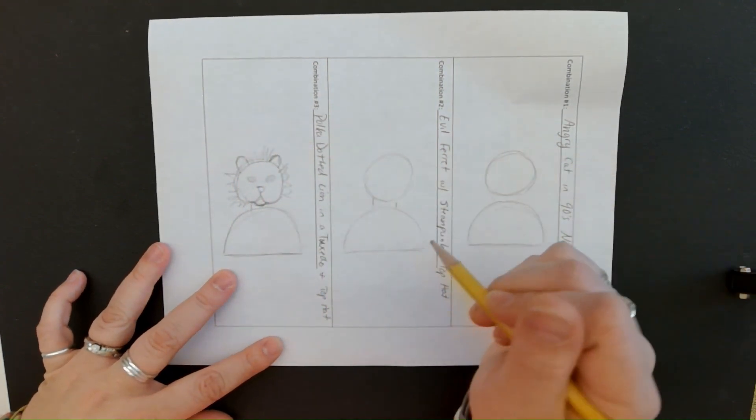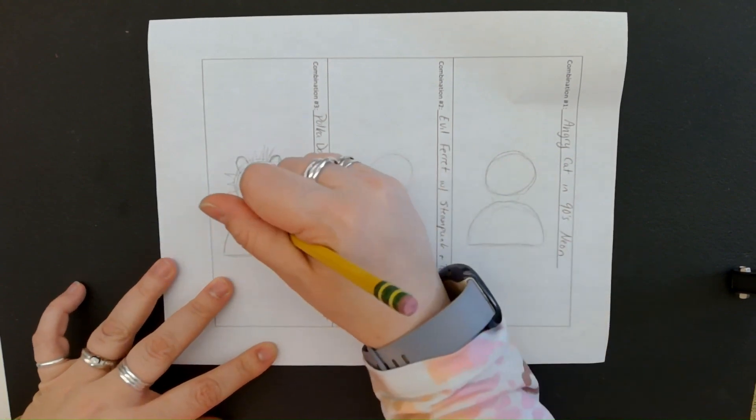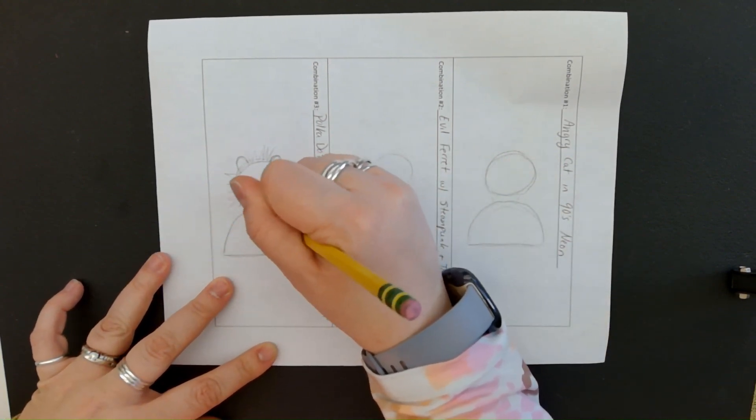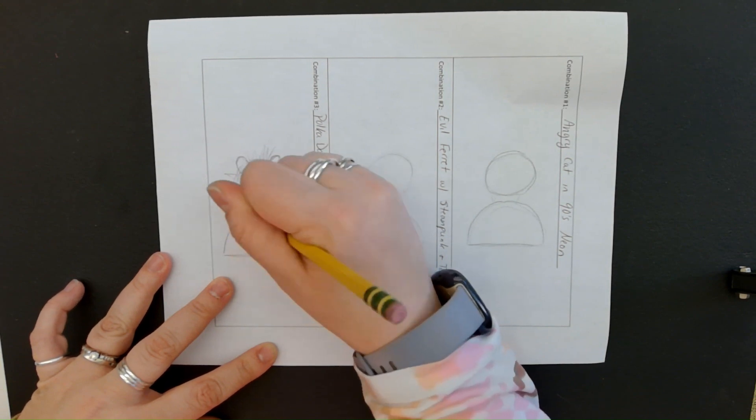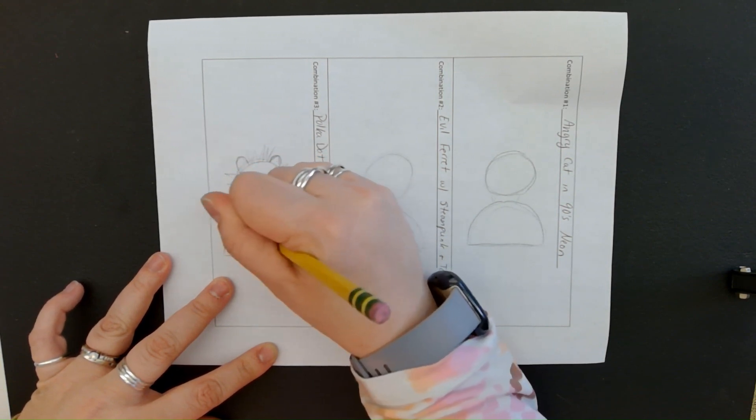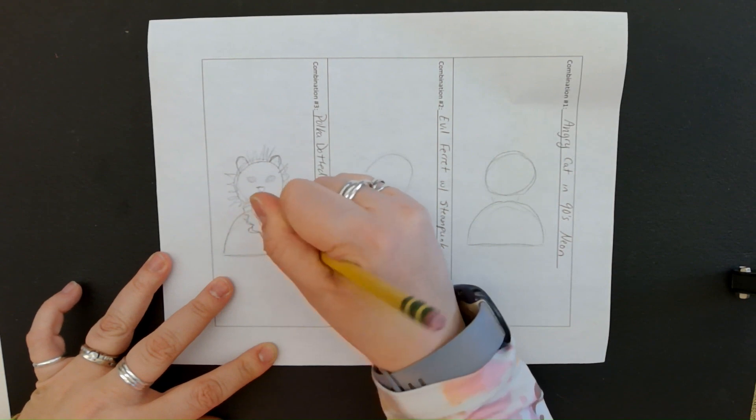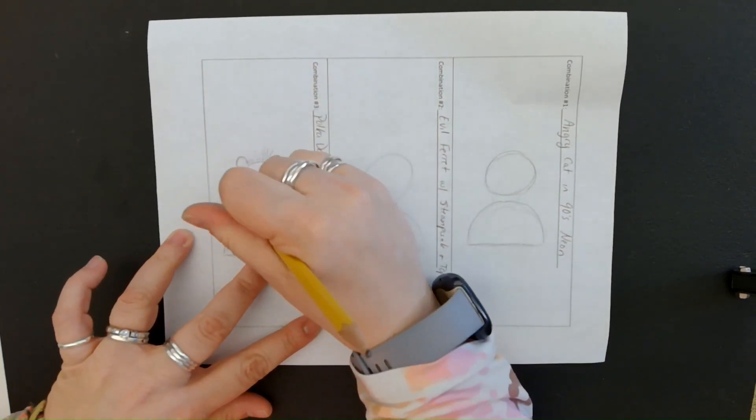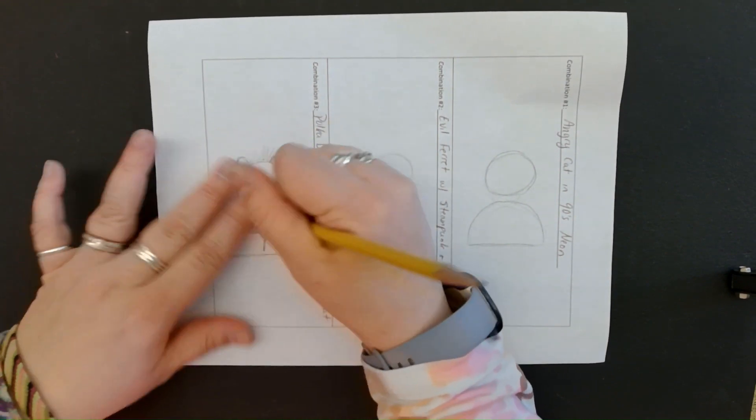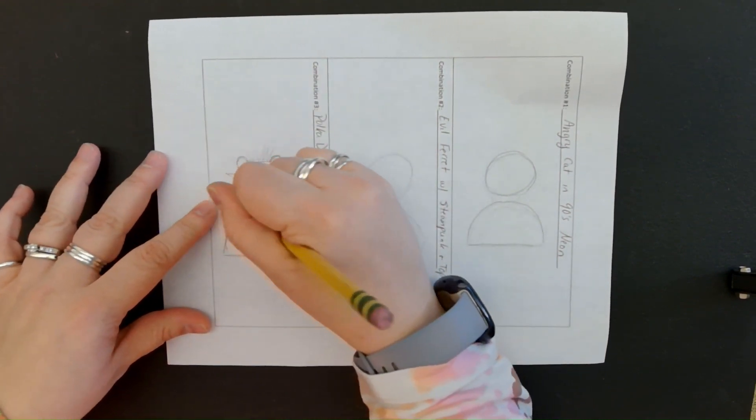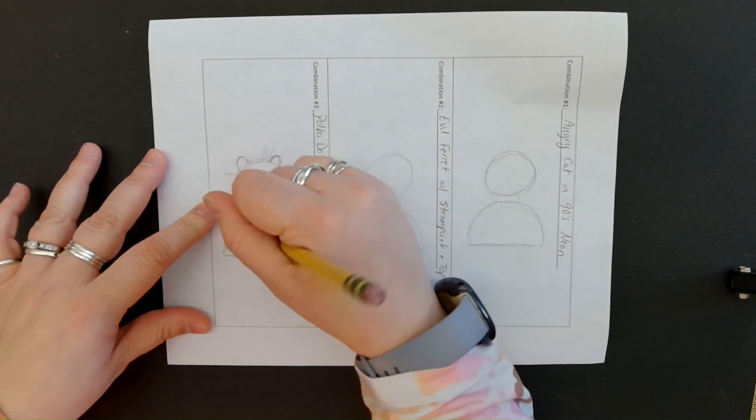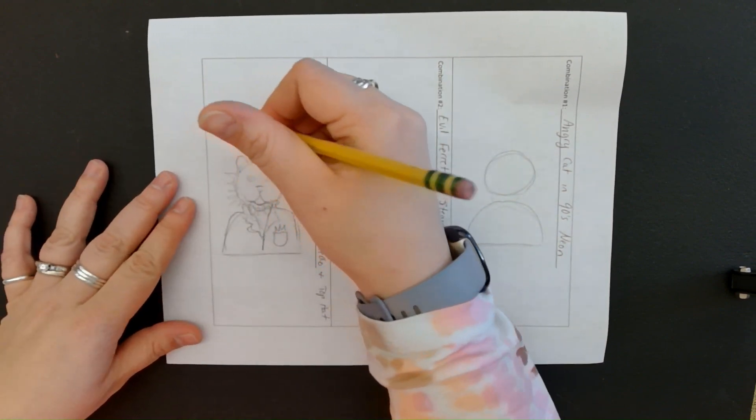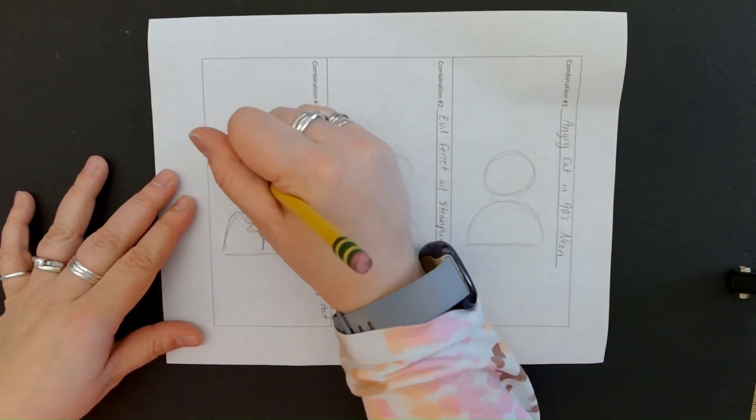So I said he's wearing a tuxedo and top hat. So I'm going to make his tuxedo. It's going to come down like this. I'm going to have like kind of a collar, button down. I'm going to have a pocket with maybe a fancy square. I'm going to erase this line in the middle. So it looks like his neck is kind of coming into the middle. And I said he's wearing a top hat, tuxedo and a top hat.